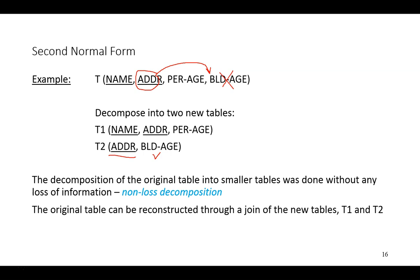The new table contains the remaining information. But notice that in order to produce data that had the name, address, person age, and building age, we need to access both tables — connecting the address column, which appears in both, to reunite the data. We're able to reconstruct the original set of data, meaning we have not lost any information by decomposing the original table into two tables. So the decomposition process is said to be a non-loss decomposition.